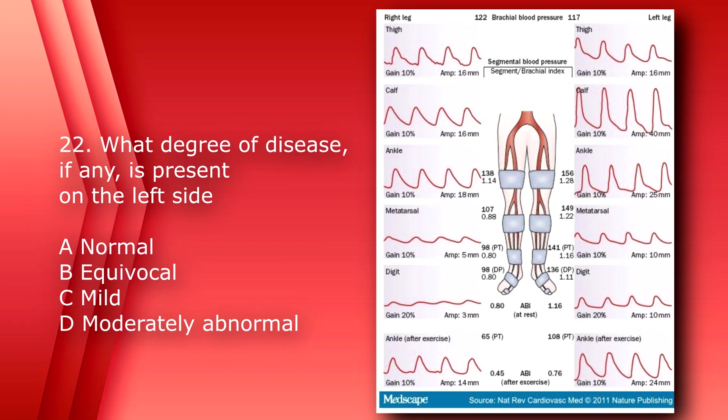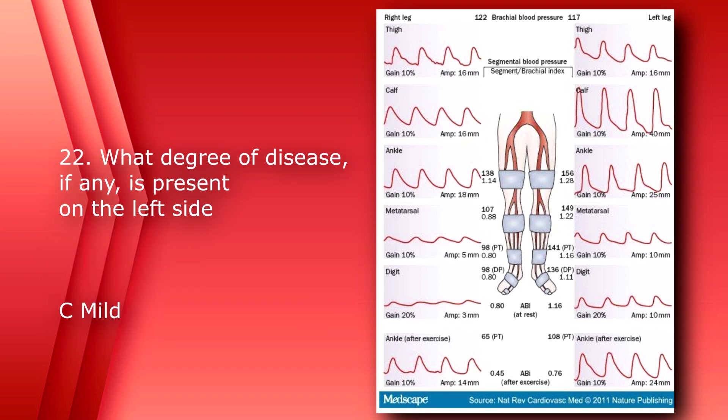Number 22. What degree of disease, if any, is present on the left side? A, normal, B, equivocal, C, mild, or D, moderately abnormal. You can see that after exercise, the left ankle ABI is 0.76. So the answer is C, mild. An ABI of 0.70 to 0.90 is considered mild obstruction.